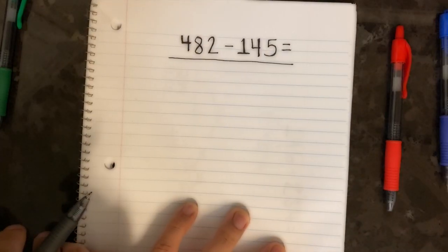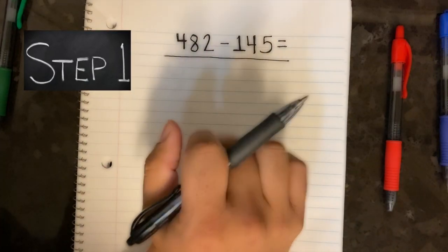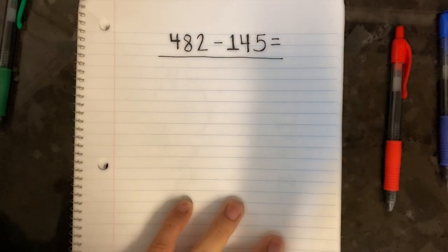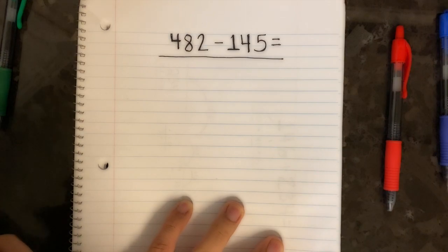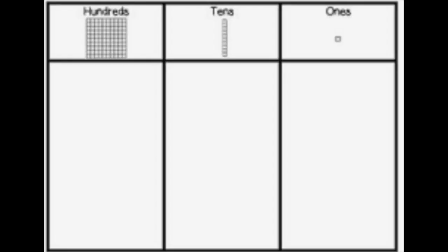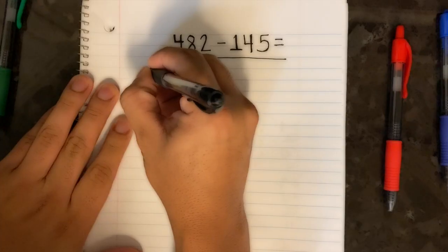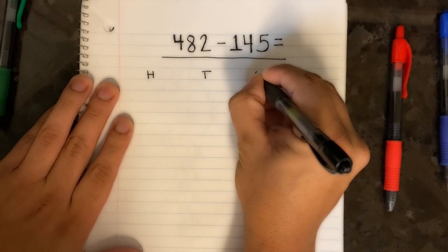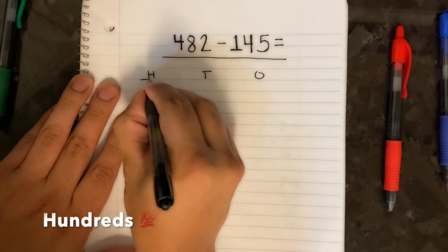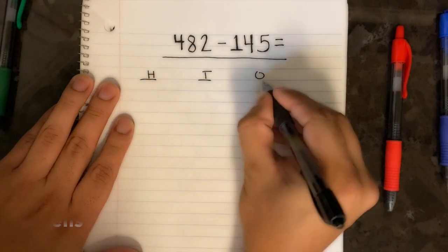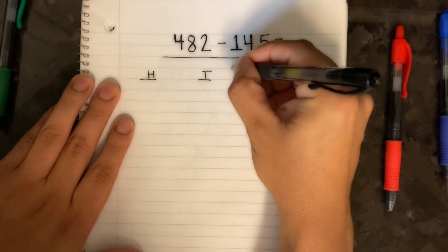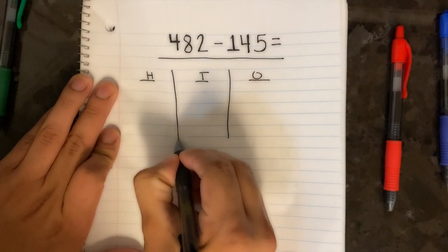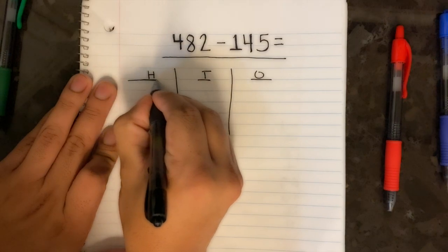Step one when subtracting using the place value strategy is to first build our hundreds, tens, and ones chart — or our HTO chart as you may have heard. Our H is for hundreds, our T is for tens, and our O is for ones, as we should already know.